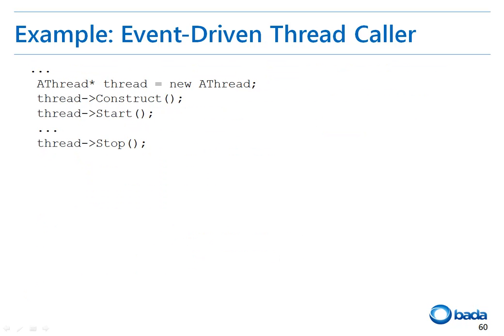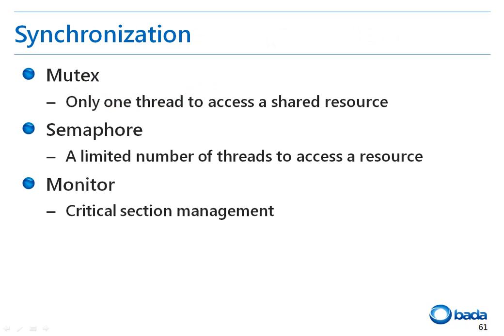You can use the event-driven thread from another thread in the same way as a conventional worker thread. Next, I will talk about the classes related to the synchronization between threads. Bada provides the mutex, semaphore, and monitor classes for synchronization. The mutex class limits access to a resource shared with threads so that only one thread can access the resource at a time.